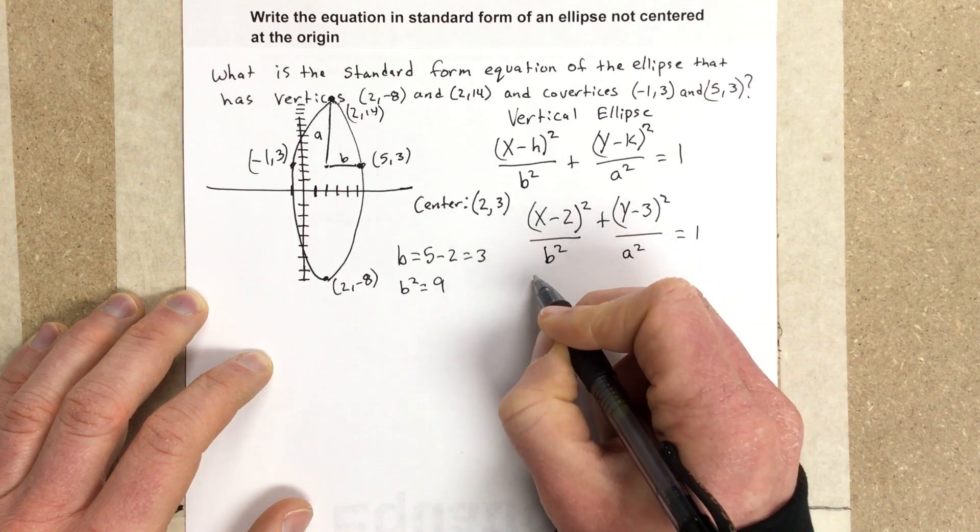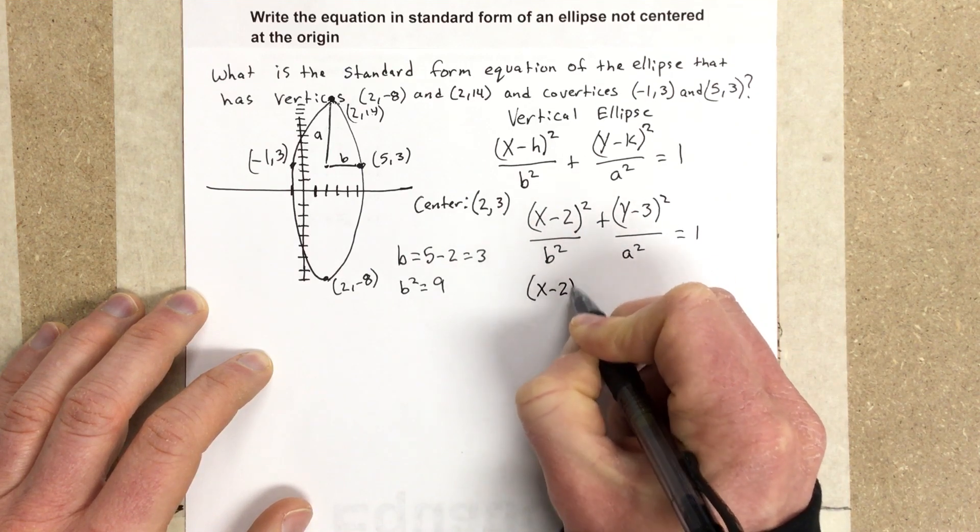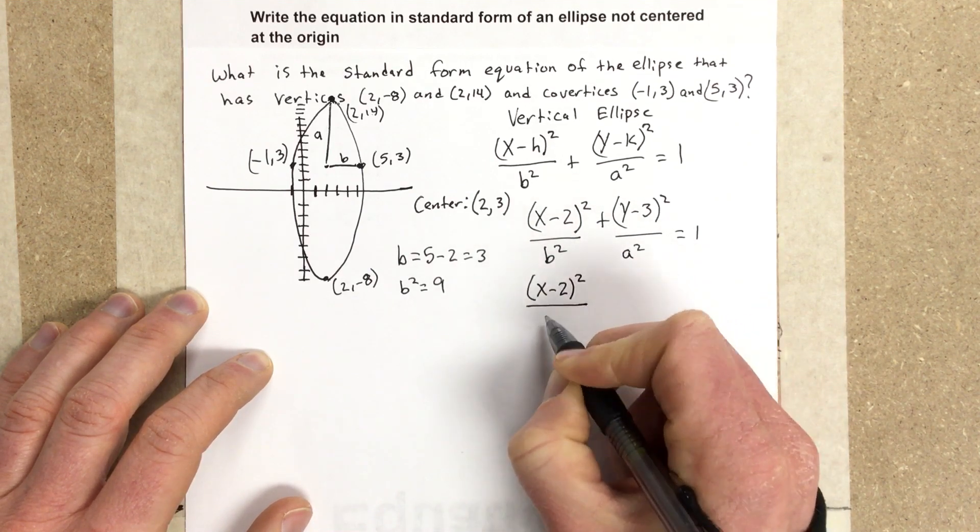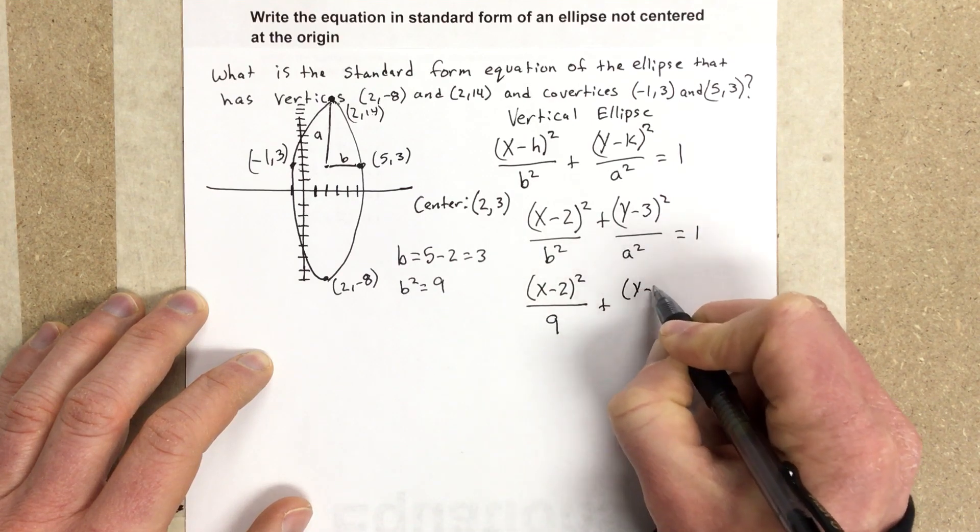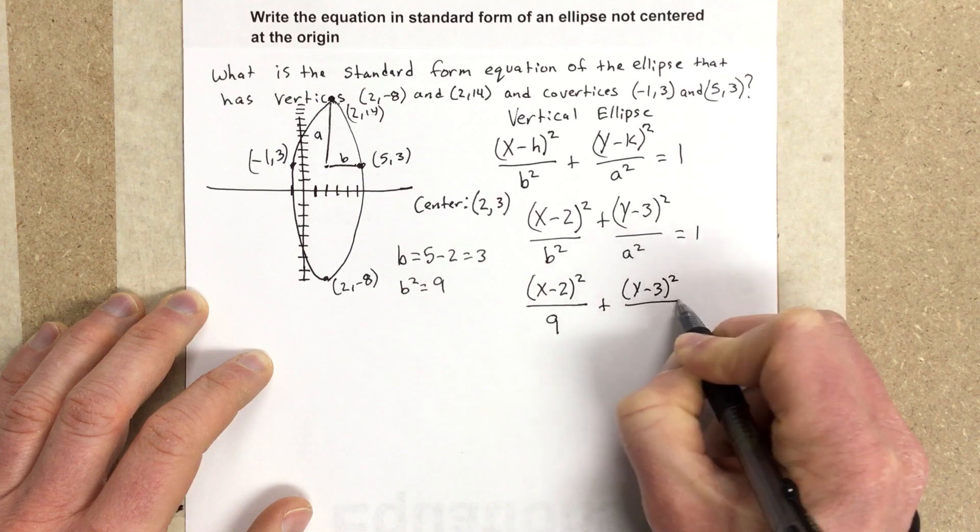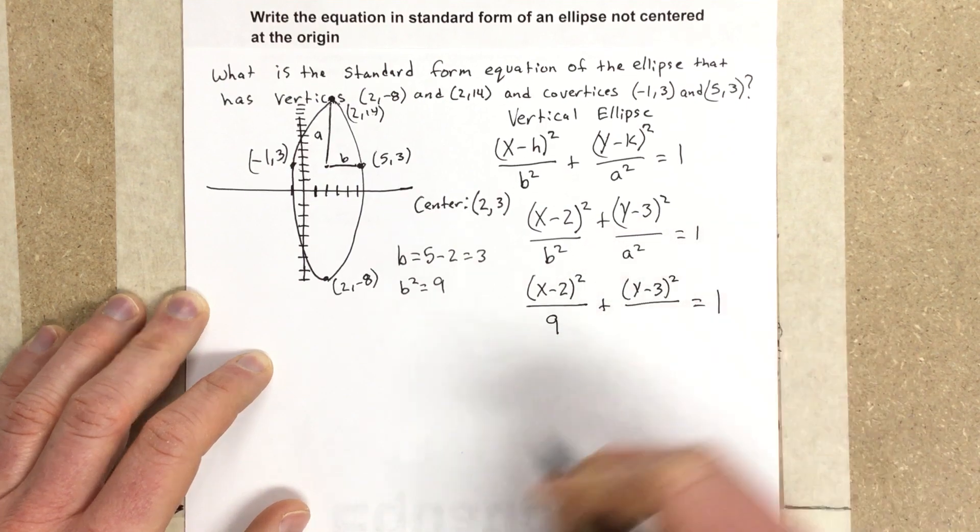So now I have (x - 2)² over 9 plus (y - 3)² over, and we're going to find a² now.